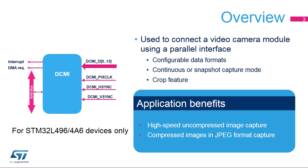The DCMI is used to connect a parallel camera module to the STM32. The camera generates a parallel data flow together with a pixel clock signal, DCMI-PIX-CLK, which allows the interface to capture the incoming data flow. Two optional signals, H-Sync and V-Sync, may be used to synchronize the image frame between the camera and the STM32. The DCMI also supports embedded line and frame synchronization code in the data flow.